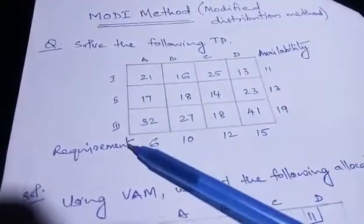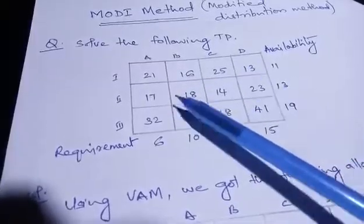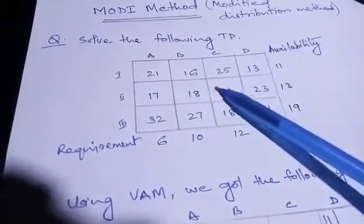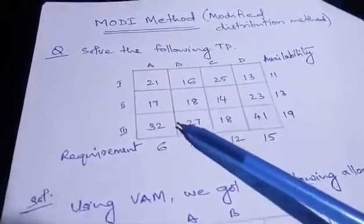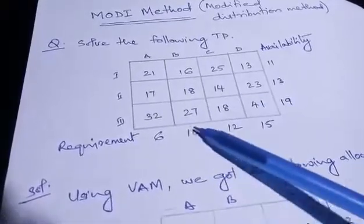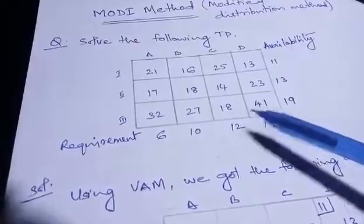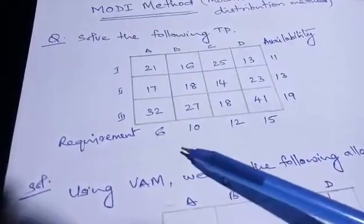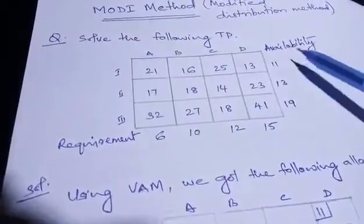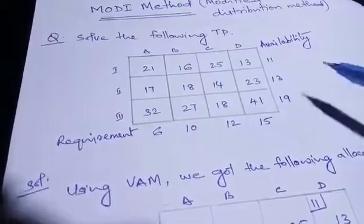The transportation problem has sources 1, 2, 3 and destinations A, B, C, D. The cost matrix values are: 21, 16, 25, 13; 17, 18, 14, 23; 32, 27, 18, 41. The demand (requirement) is 6, 10, 12, 15 and the supply (availability) is 11, 13, and 19.